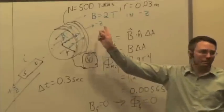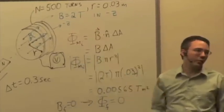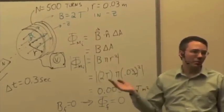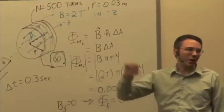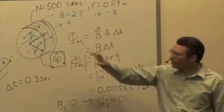B initial is that way. B final is zero. So what's delta B? What's the direction of delta B? Is it in or out? It's out. So delta B is out.